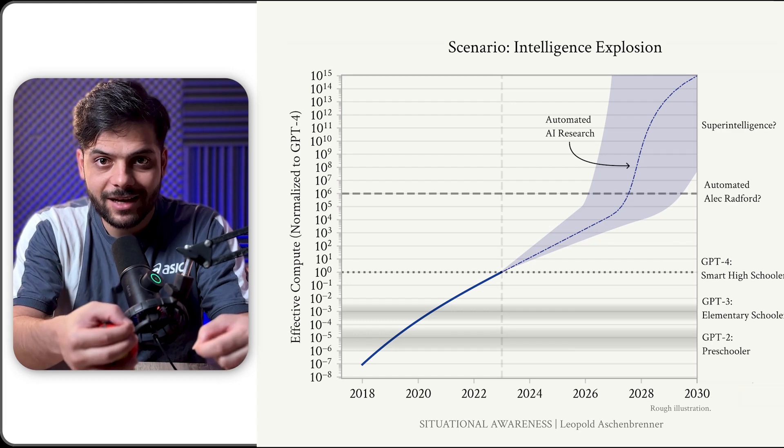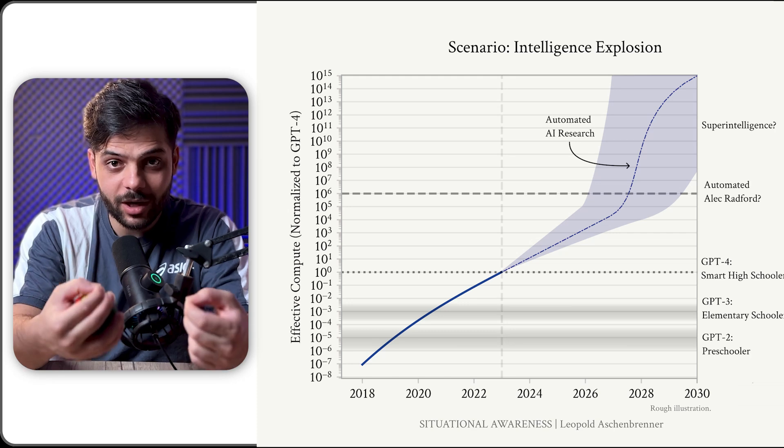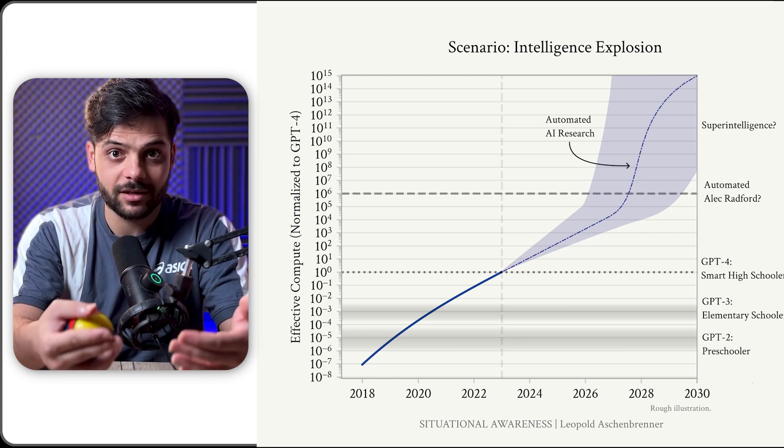AlphaEvolve relies on Gemini as its core idea generator and evaluator. So by improving Gemini, it is improving its own ability to improve Gemini better, and so on.